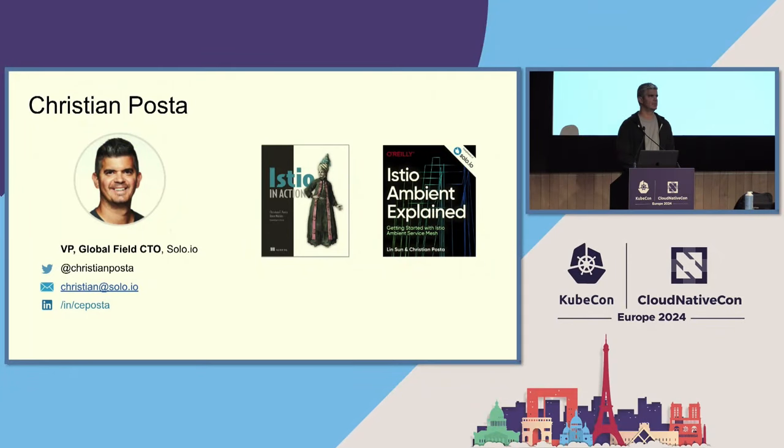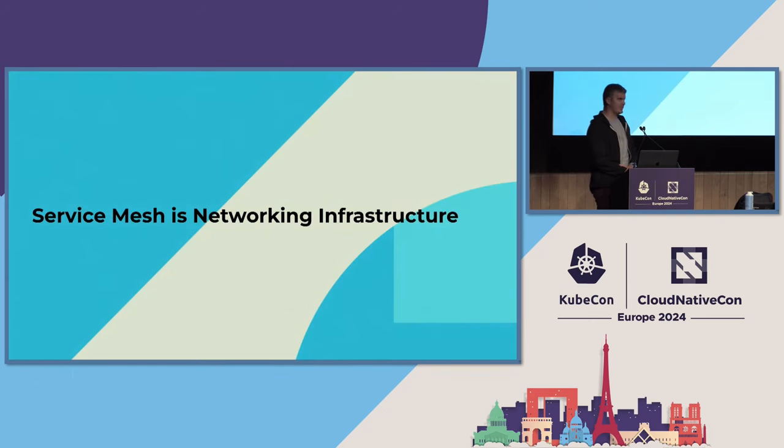I'm going to be talking about Service Mesh, specifically two open source projects that implement a sidecar-less version of Service Mesh. My name is Christian. I'm a global field CTO at a company called Solo.io. I've been involved in open source for a long time, in Service Mesh for the last seven years since early 2017, and in Kubernetes since before it was 1.0. I worked at Red Hat before this, involved in messaging and integration. Distributed systems is my background, specifically application-layer distributed systems.